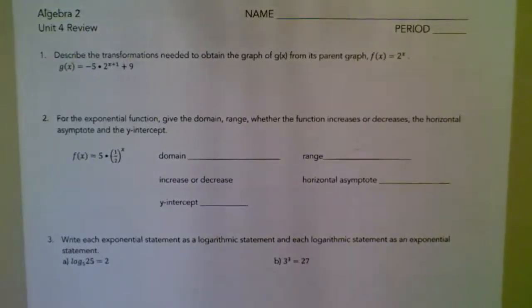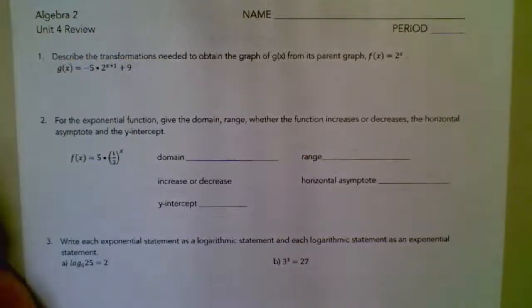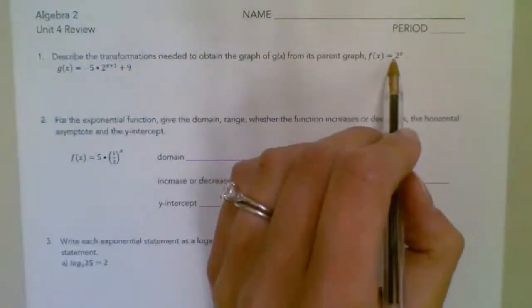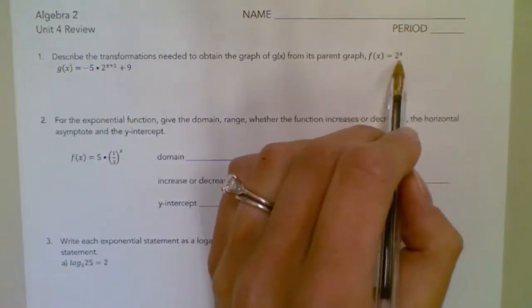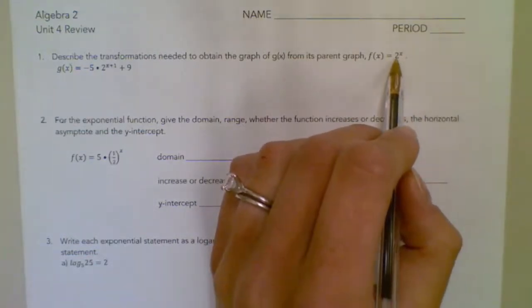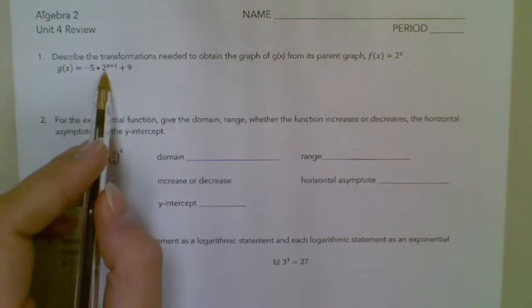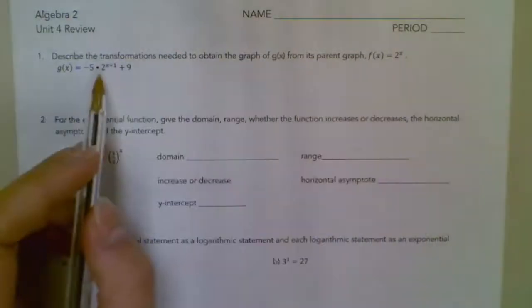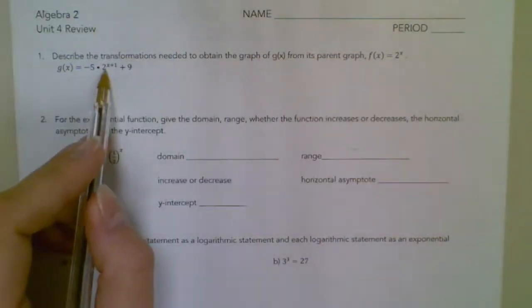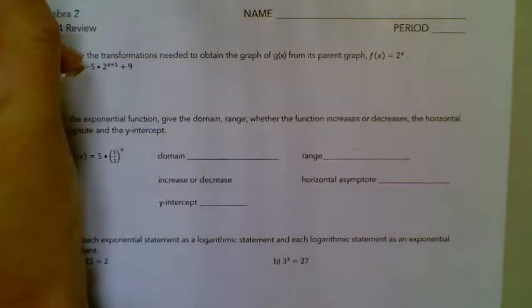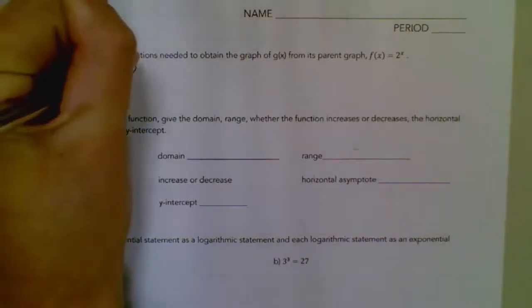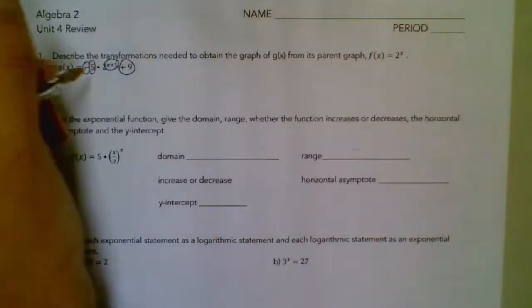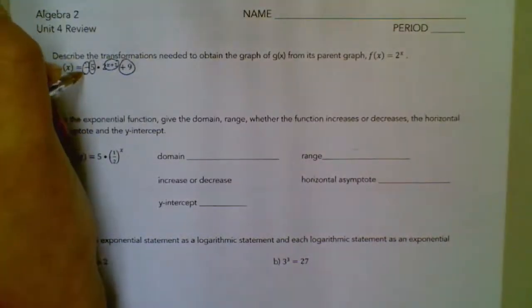So number one says, describe the transformations needed to obtain the graph of g of x from its parent function f of x equals 2 to the x power. So this is our exponential function — 2 is the base of it. Since the 2 is the base of the parent function, that's not a transformation. Everything else is. So it looks like we have 1, 2, 3, 4 transformations. Remember, the negative is its own transformation.